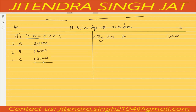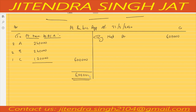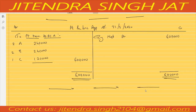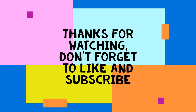In this question C's guarantee is one lakh but C is already getting 1,20,000, which is more than one lakh. So there is no deficiency and no adjustment is required. The guarantee of profit concept is used only when there is any deficiency.